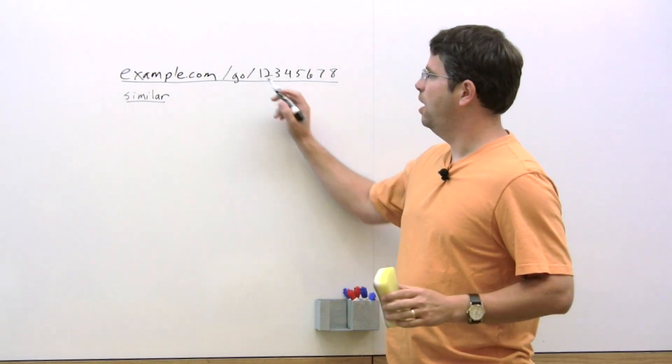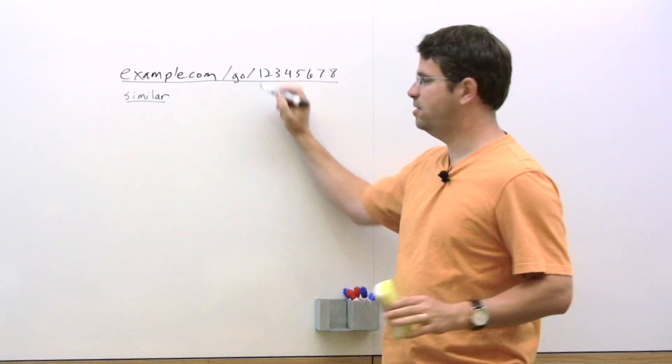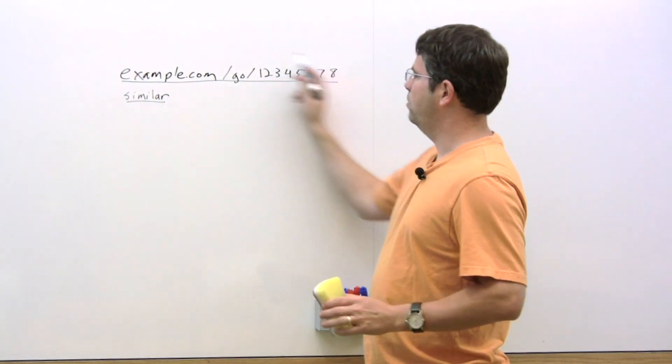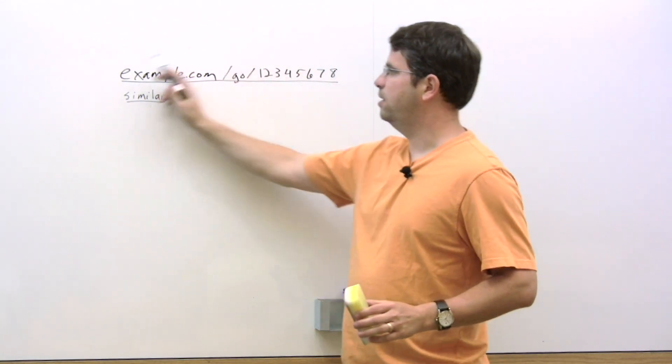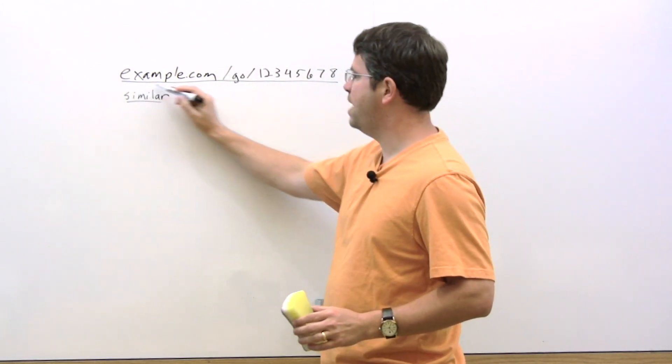When someone's saying, I blocked example.com/go in robots.txt, it turns out that the snippet that we return in the search results looks like this. And you'll notice, unlike most search results, there's not some text here.